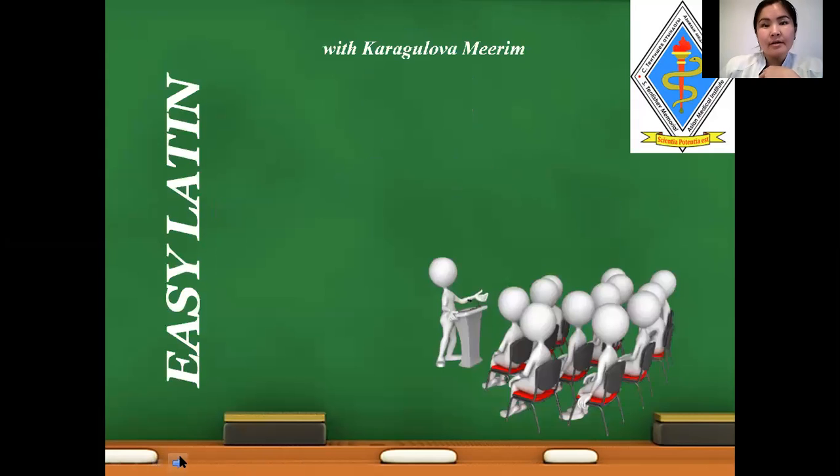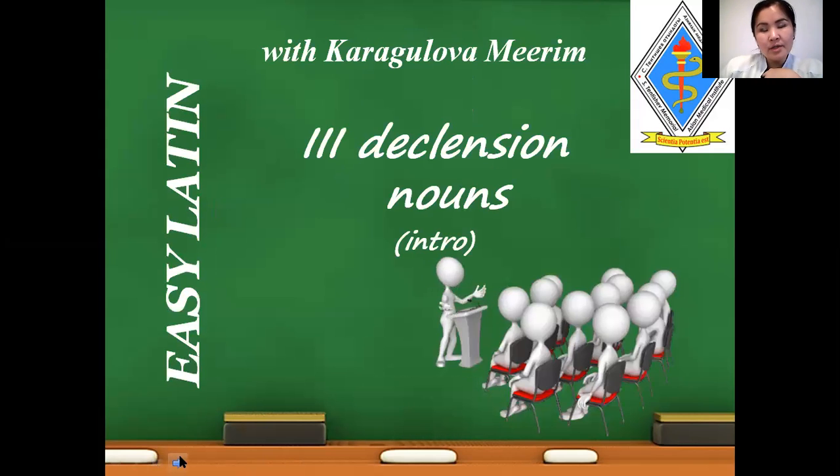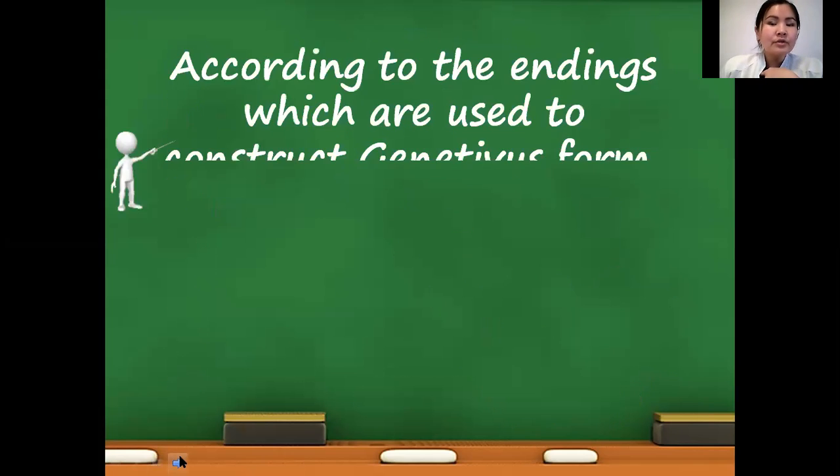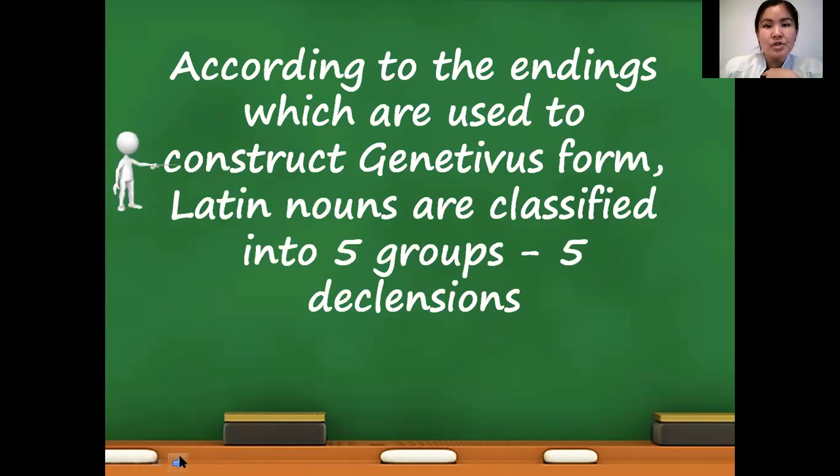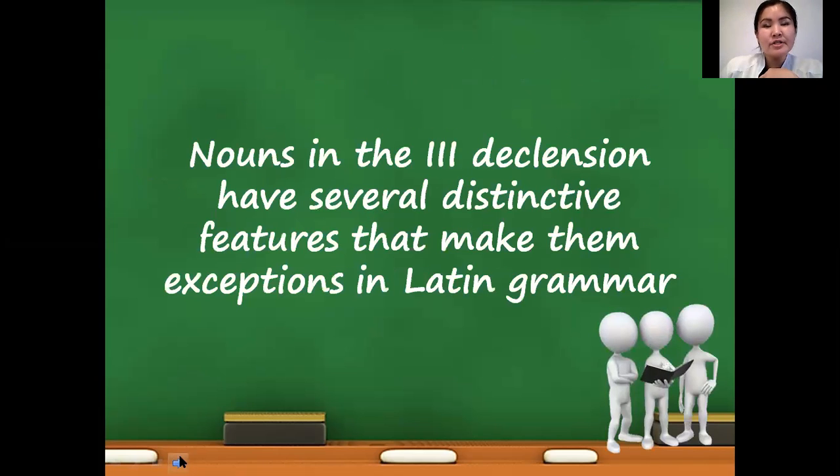Okay let's start our Latin lesson and today we are talking about third declension nouns. You know that according to the endings which are used to construct genitivus, all Latin nouns are divided into five groups, so-called five declensions. Nouns of third declension have several specific features that make them a big exception in Latin grammar which we must be very attentive about.